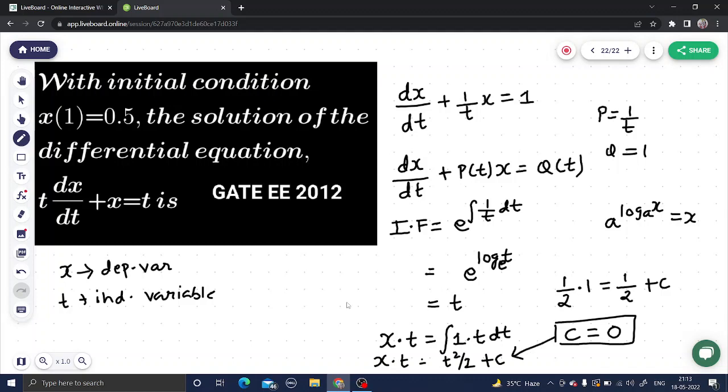So if c equals 0, I will put this c in the equation and end up getting my final answer as tx equals t squared by 2. This is my final answer: tx equals t squared by 2.